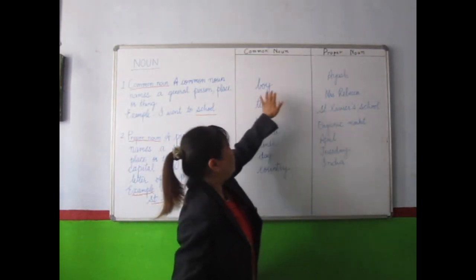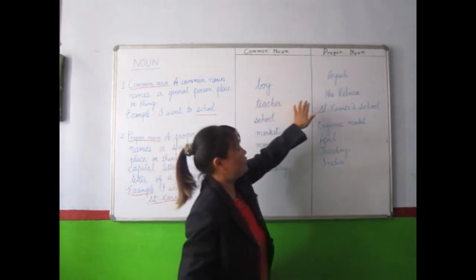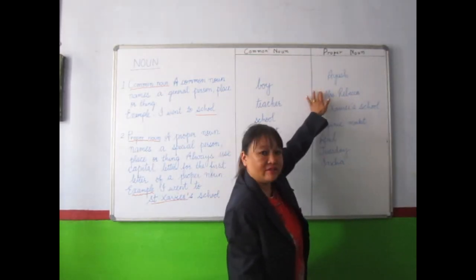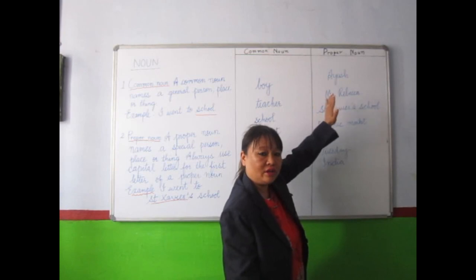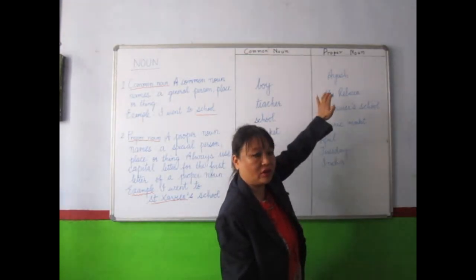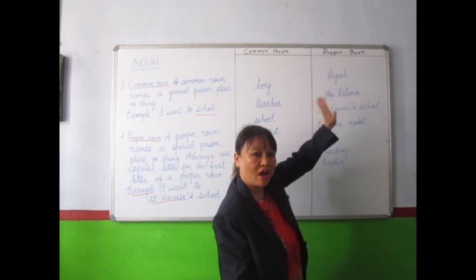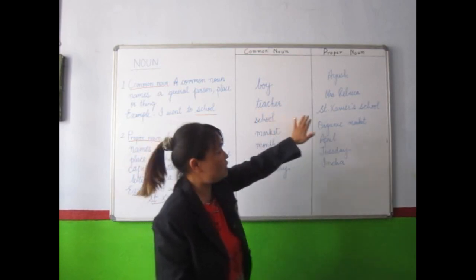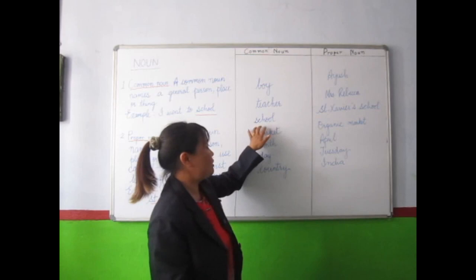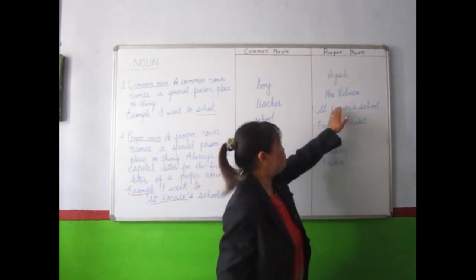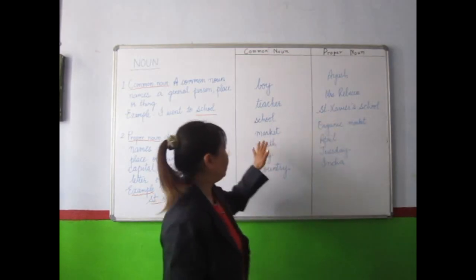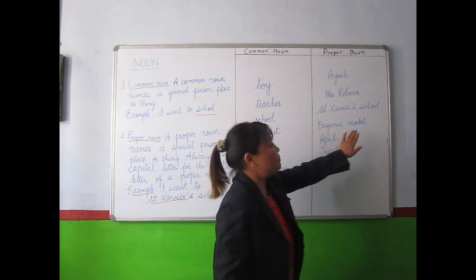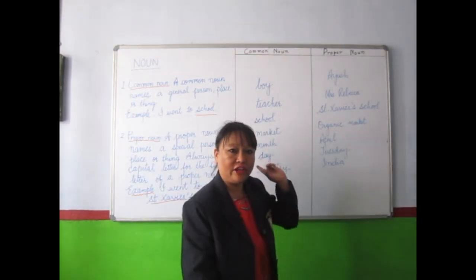Proper noun — when I talked about boy, that means if I say particularly Ayush, it makes sense. It's a particular, specific person. We are talking about a boy and his name is Ayush. Mrs. Rebecca — teacher, which teacher? Mrs. Rebecca. School — St. Jerry's School. So these are proper nouns. Market — organic market is a particular name of a place.